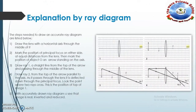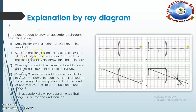Now we will explain it by a ray diagram. The steps needed to draw an accurate diagram are listed below. First, draw the lens with the horizontal axis through the middle of it. This line is called the horizontal axis through the middle of the lens. Second, mark the position of the principal focus on either side at equal distances from the lens.